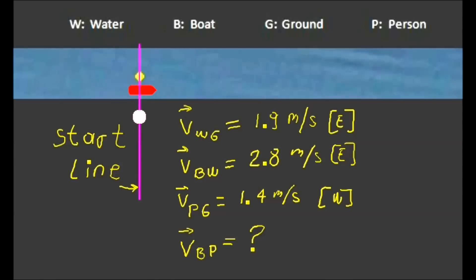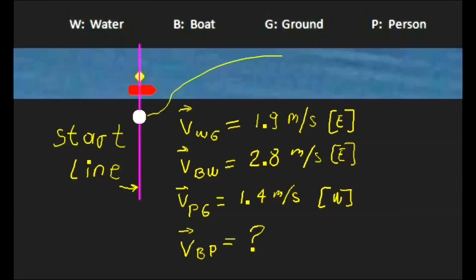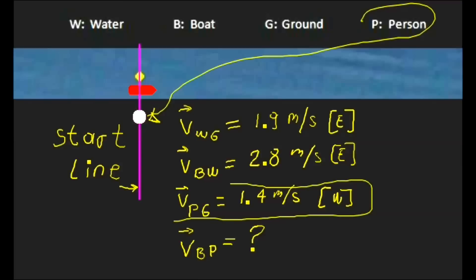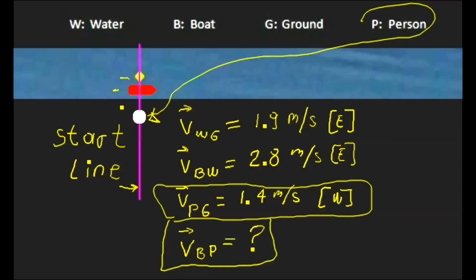In this next example, I add another velocity. There is a person on the start line, and the velocity of the person relative to the ground, V_PG, is 1.4 meters per second west. The question is: what is the velocity of the boat relative to the person? The person, the boat, and the wood all start at the same time, and the wood represents the water.